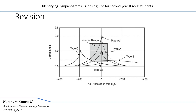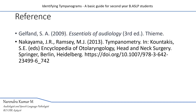Type B tympanogram is seen in three conditions: a flat tympanogram with normal ear canal volume indicates middle ear effusion; a flat tympanogram with large ear canal volume indicates a perforated tympanic membrane; and a flat tympanogram with reduced ear canal volume indicates obstruction in the ear canal, mostly impacted cerumen. Type C tympanogram indicates Eustachian tube dysfunction, where the peak pressure is shifted towards the negative side, indicating the middle ear pressure is negative in nature. These are the references for this video lecture. Thank you.